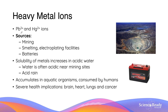Heavy metal ions are predominantly lead and mercury ions, but can also include platinum ions. Sources of these heavy metals include mining, smelting, and electroplating facilities or batteries. Since the solubility of these metals increases in acidic water, acid rain can be particularly bad for the dissolution of heavy metals. The result of ingesting these dissolved metals is that they can accumulate in aquatic organisms which are then consumed by humans, causing severe health implications such as brain, heart, and lung problems.